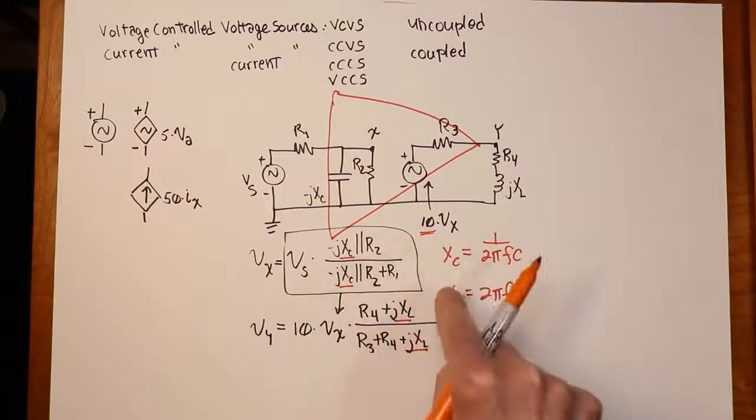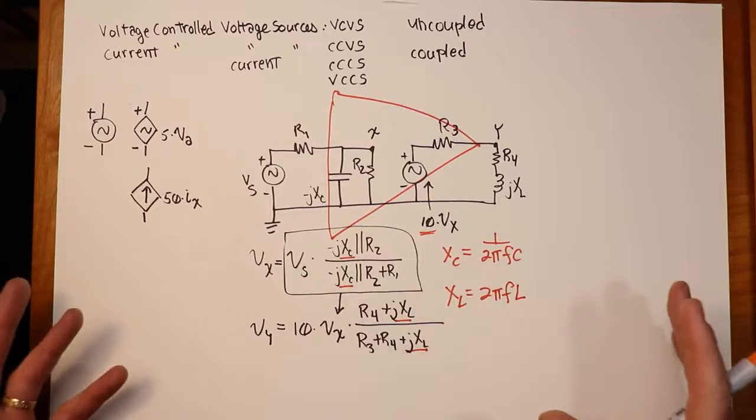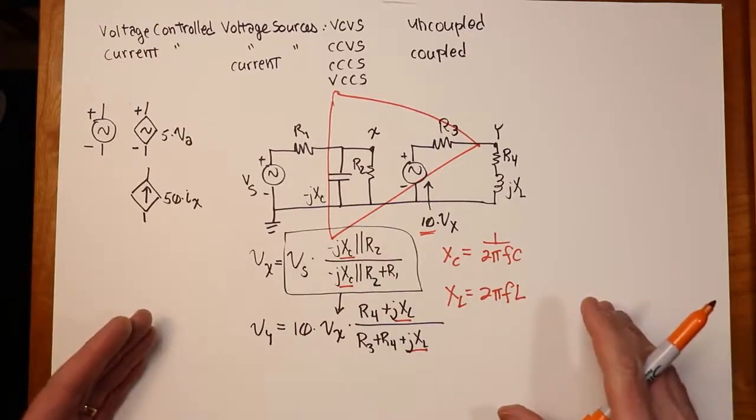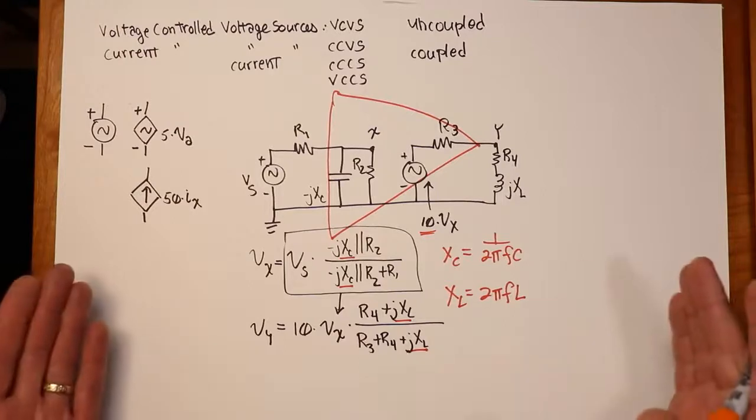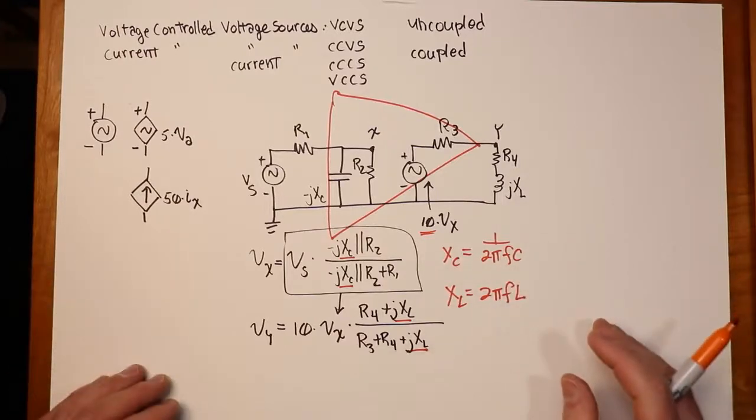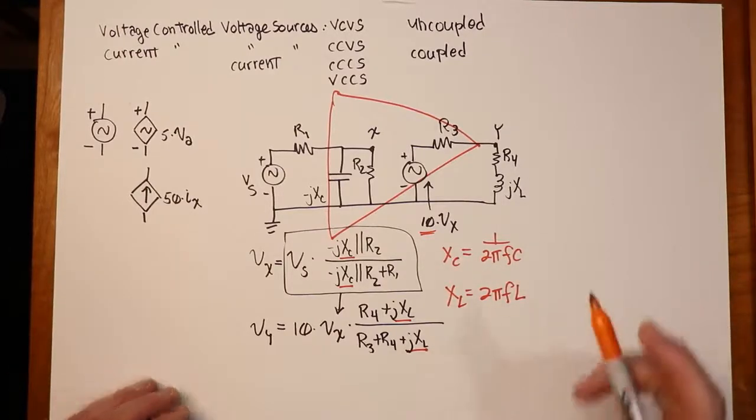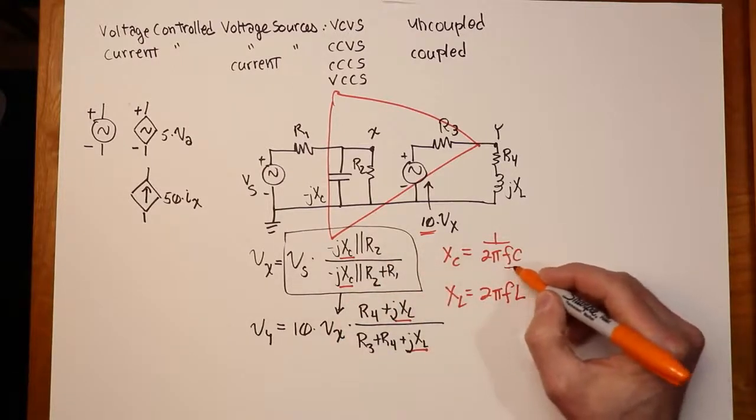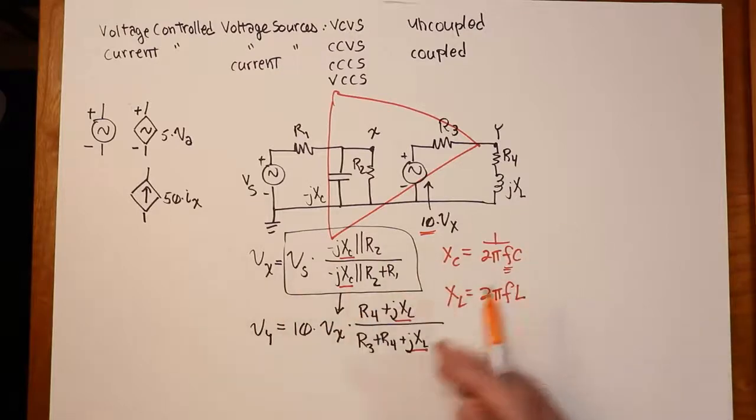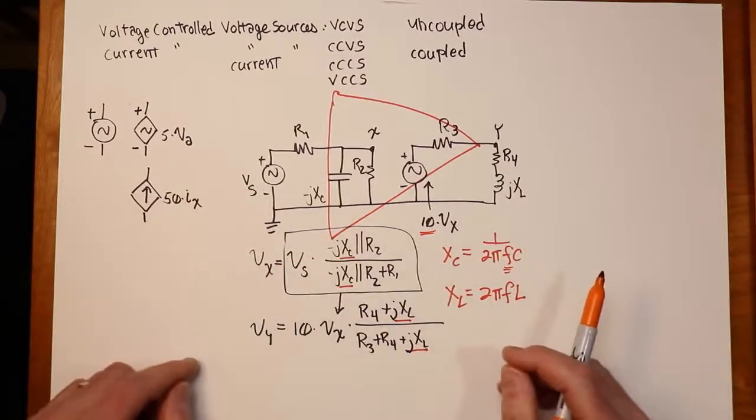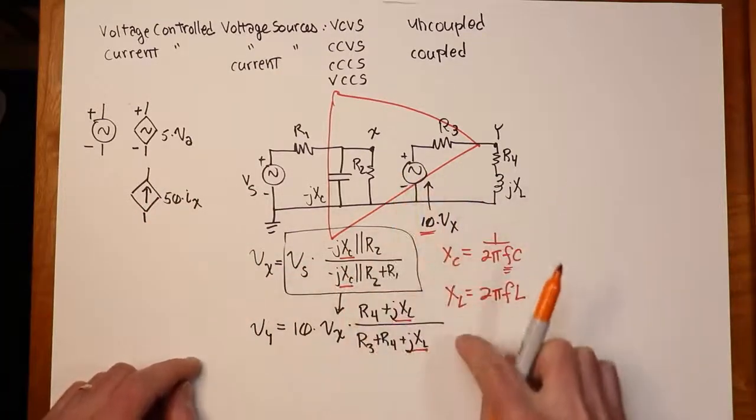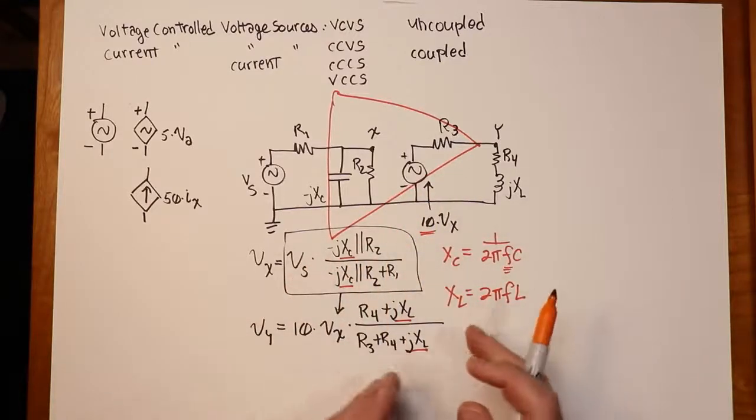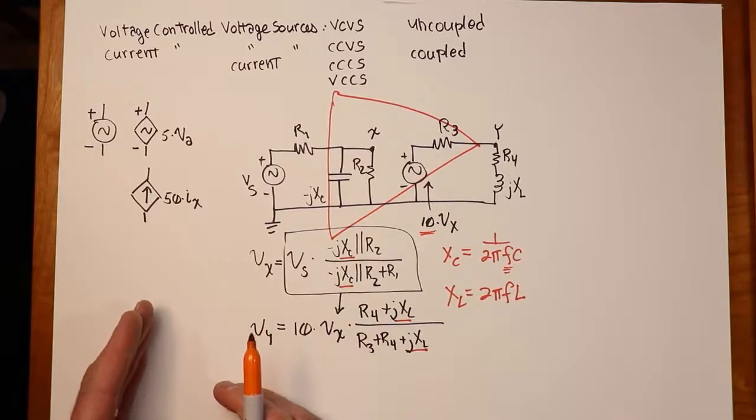So you can do something really cool with this. You could maybe write a computer program in C or Python, something like that, or you could even do this in a spreadsheet, where you would cycle through in a loop values for the frequency. So you would start at maybe 10 hertz or something like that, compute values for your reactances, plug them into this equation, and you could get a particular output voltage.